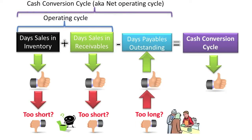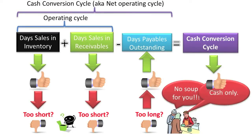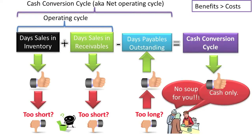For example, suppliers who do not get paid on time, as agreed, may simply choose to stop selling to the company, choose to tighten up their credit policies, or worse yet, choose to require cash on delivery (COD) for all purchases. In short, as management strives to reduce its cash conversion cycle, it needs to ensure that the benefits of a shorter cycle outweigh the related costs.